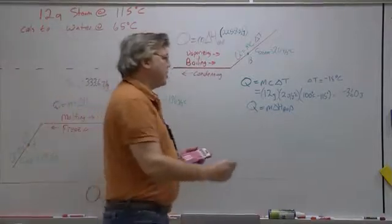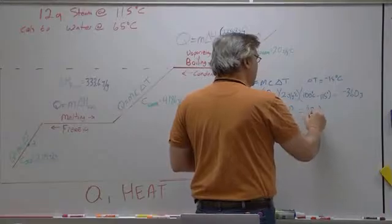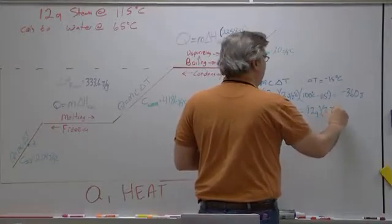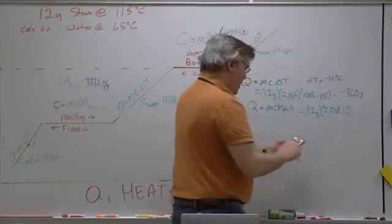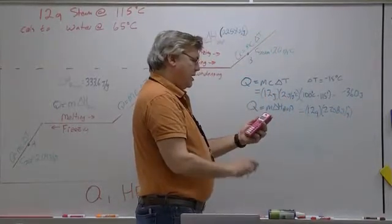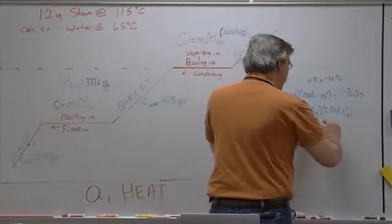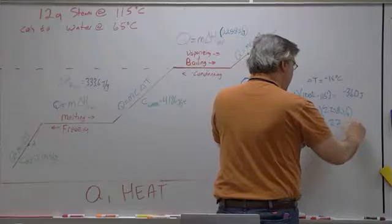So I have my 12 grams times 2258 joules per gram, and if I plug that in, I have 12 times 2258. So I end up with a whopping 27,096.